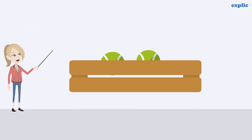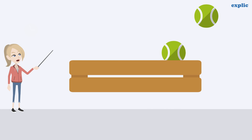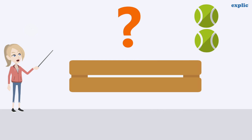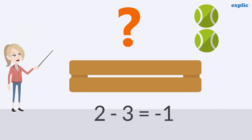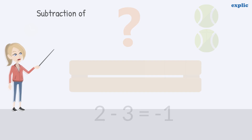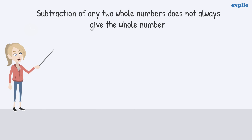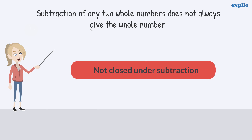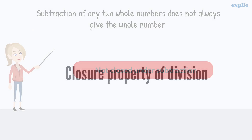Can you take away 3 balls from 2 balls? It's not possible practically, but in mathematics we represent it with minus 1, which is not a whole number. Hence, subtraction does not always give you a whole number. That means whole numbers are not closed under subtraction.